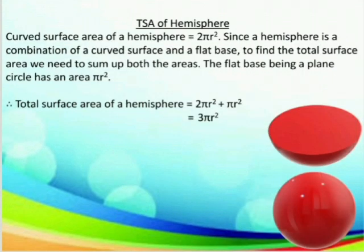Now let us look into the formula for the total surface area of a hemisphere. We have already learned that the curved surface area of a hemisphere is 2π r². Since a hemisphere is a combination of a curved surface and a flat base, to find the total surface area we have to sum up both areas. The flat base, being a plane circle, has an area of π r². Thus, the total surface area of the hemisphere is 2π r² + π r², that makes 3π r².